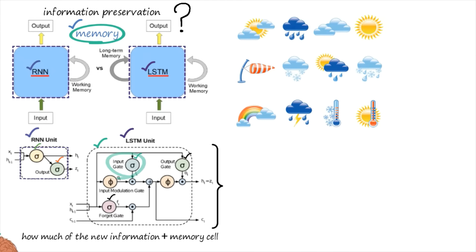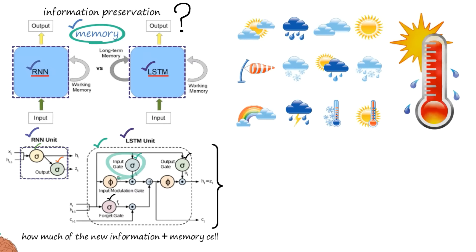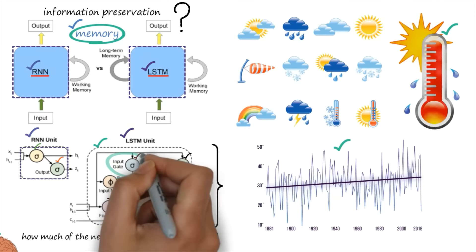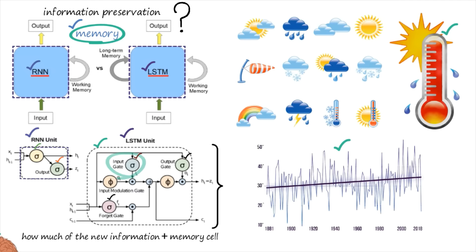Consider a weather prediction task where the LSTM is trained to predict temperature based on historical weather data. The input gate in the LSTM would determine how much of the current weather data — temperature, humidity, wind speed — should be added to the memory cell to update the model's understanding of the weather parameters. So the input gate determines which features and how many of them should be considered for better prediction.